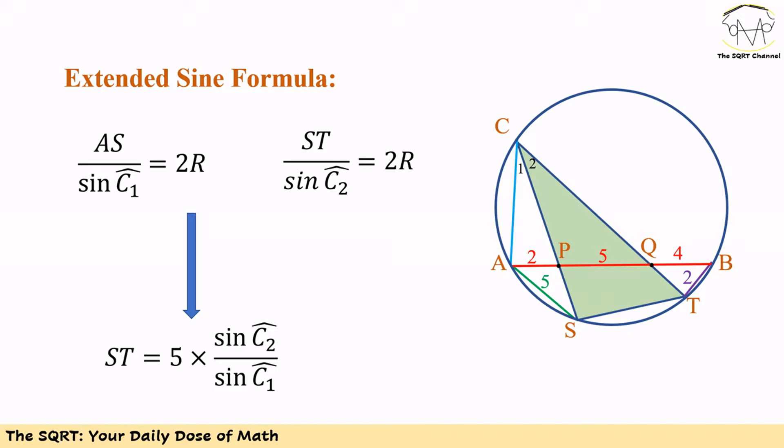Since both expressions equal 2R, we can say AS over sine of C1 is equal to ST over sine of C2. This gives us ST equals 5 times sine of C2 over sine of C1.